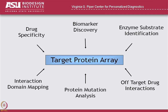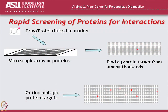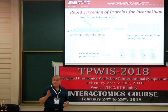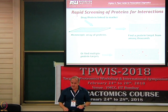There are many things you can do with a target protein array: drug specificity, biomarker discovery, enzyme substrate identification, interaction domain mapping, analysis of how gene mutations affect protein function, and off-target protein interactions. For example, if you have a fluorescently tagged molecule and probe the array, you can see which protein that molecule targets, or if it binds to multiple proteins, you get a sense of its specificity.